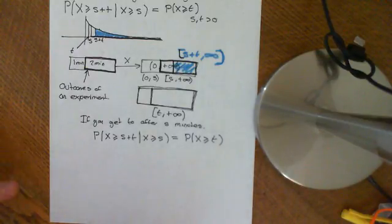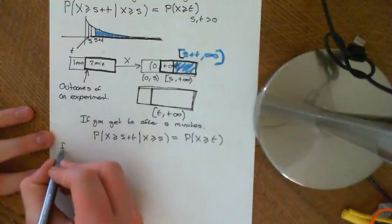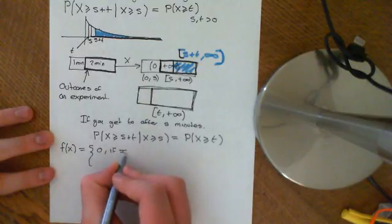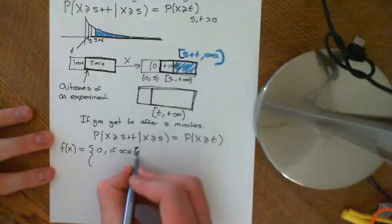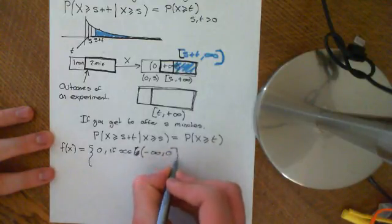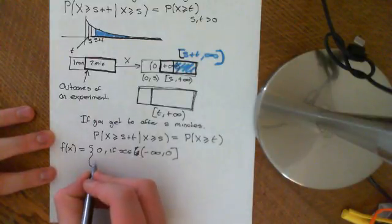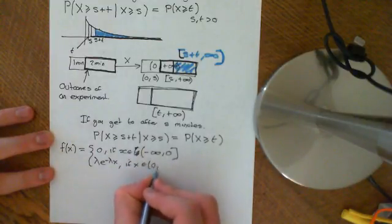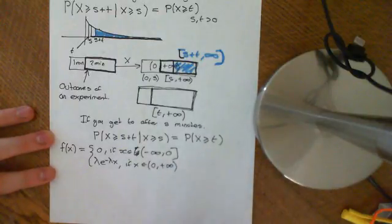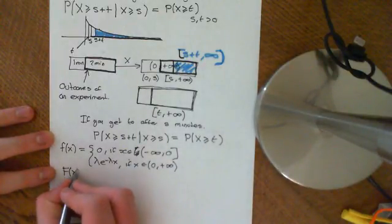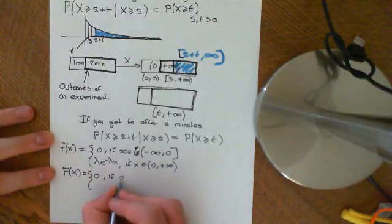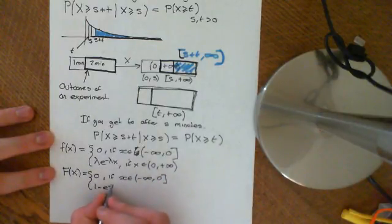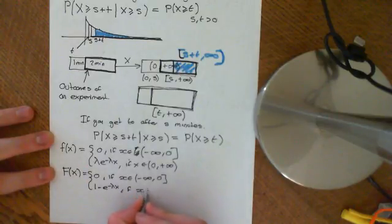Let's see why the exponential distribution obeys this. The PDF of the exponential distribution is zero if x is an element of negative infinity to zero, and it's equal to lambda e to the negative lambda x if x is an element of the positive real numbers. We also know that the CDF, big F of x, is equal to zero if x is an element of the non-positive real numbers, and equal to 1 minus e to the negative lambda x if x is an element of the positive real numbers.